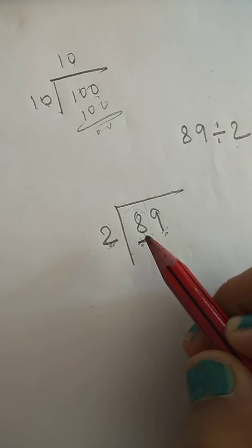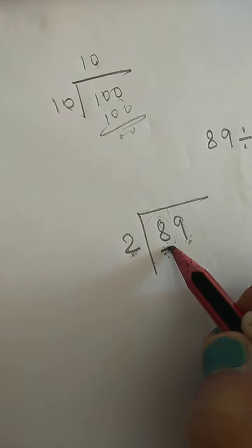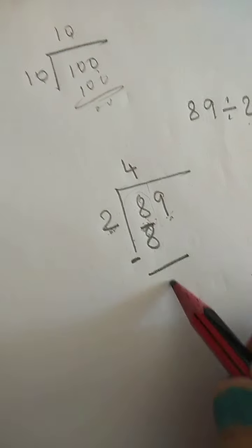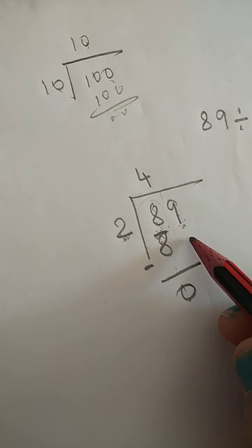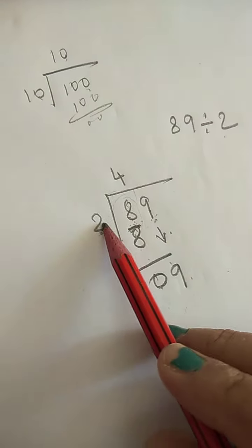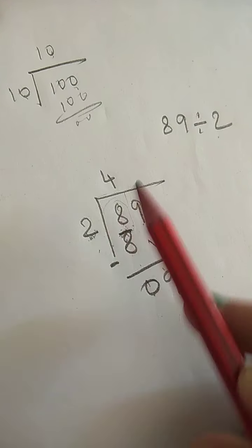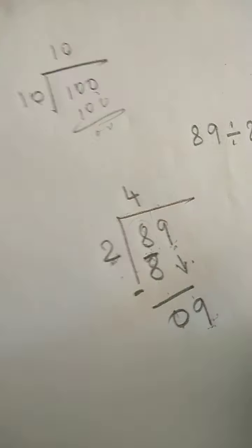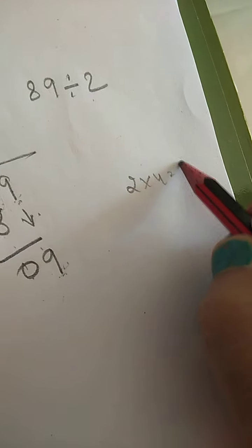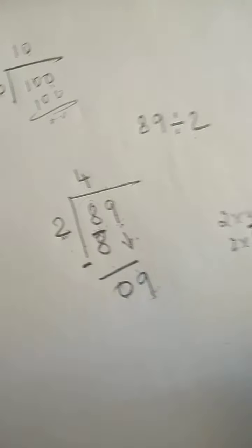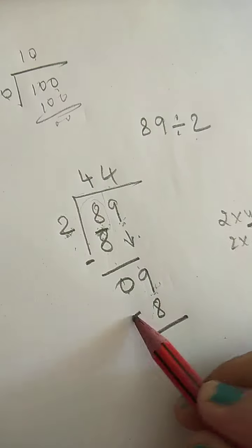So here, dividend is big. So 2 times 4 is 8. Always you have to subtract here. 8 minus 8 is 0. Then you have to bring down this 9. 2 times 4 is 8. 2 times 5 is 10. 10 is bigger, so you have to take smaller number. So 2 times 4 is 8. Minus gives you 1.